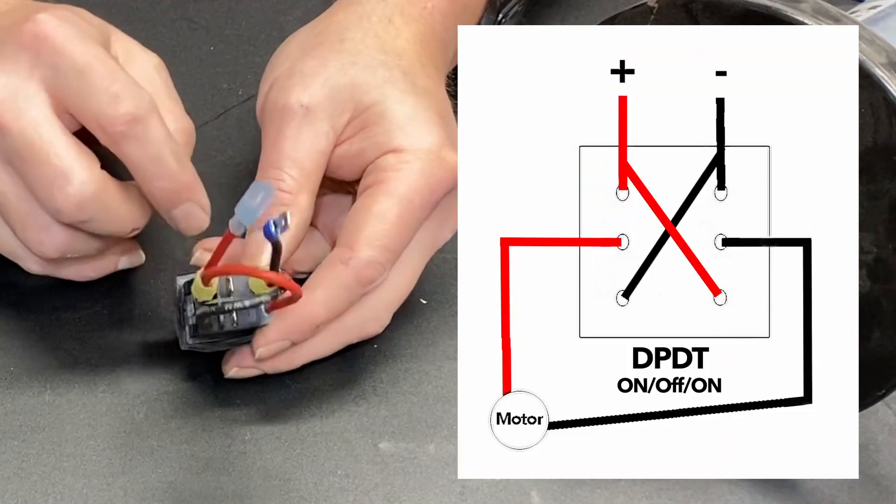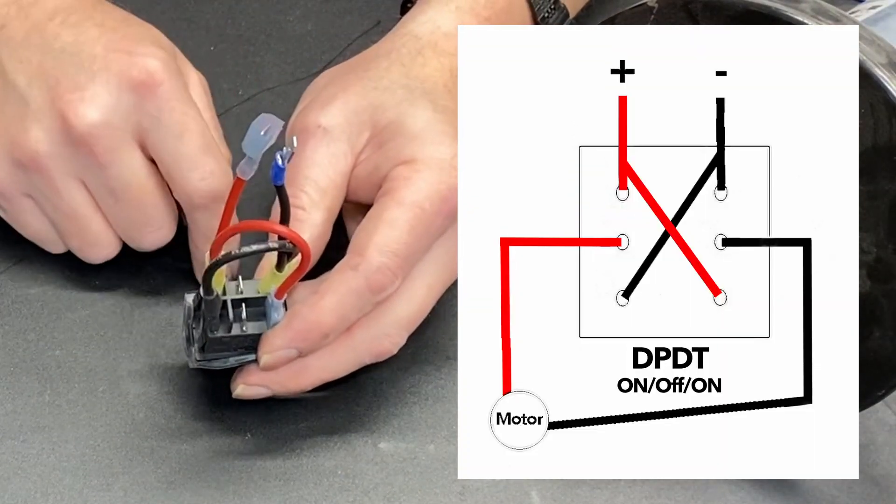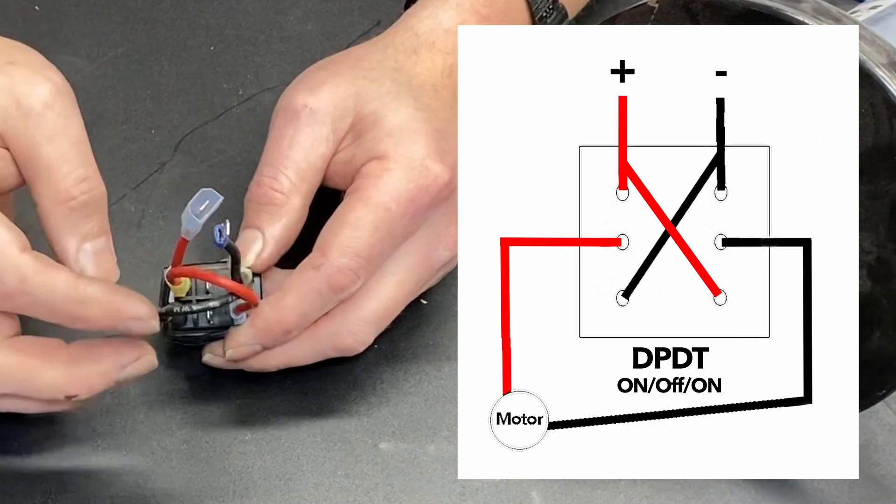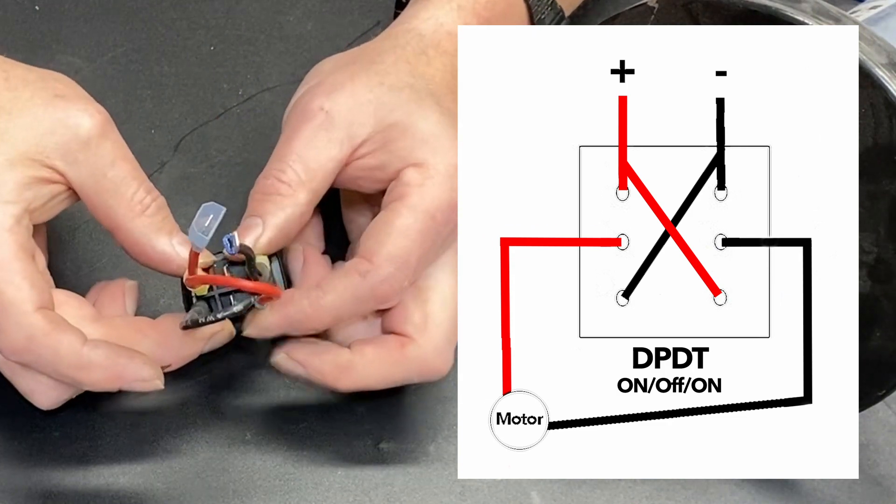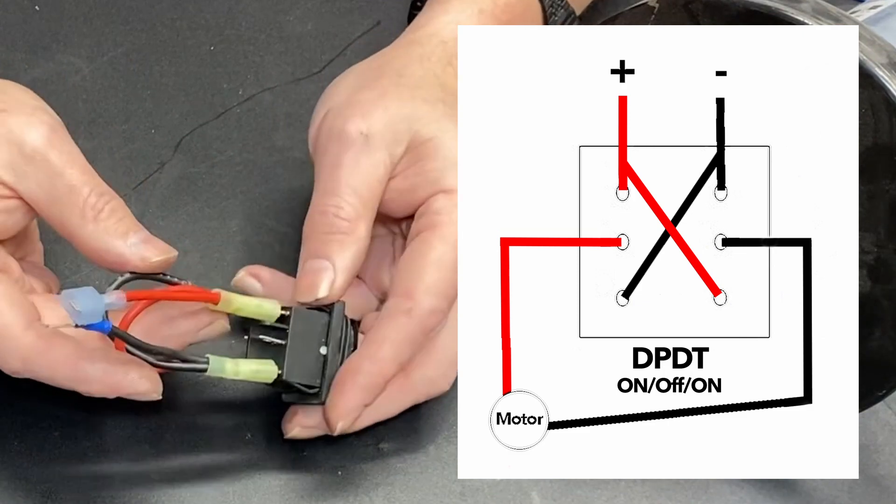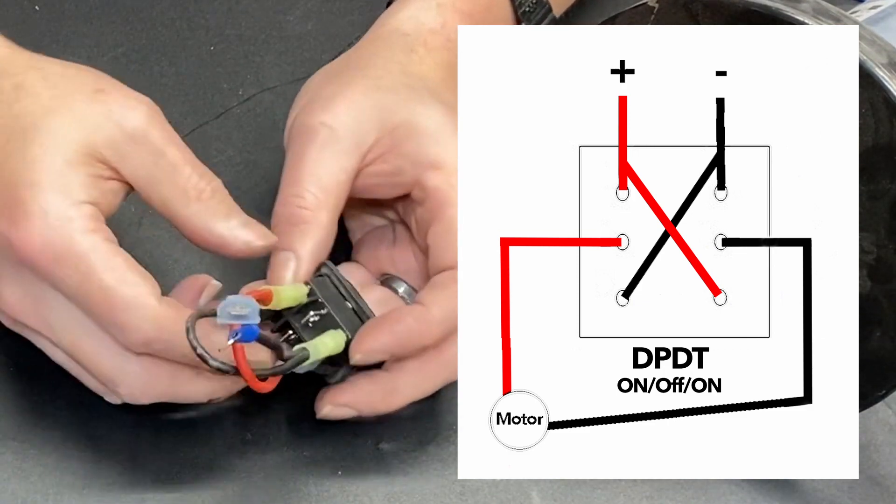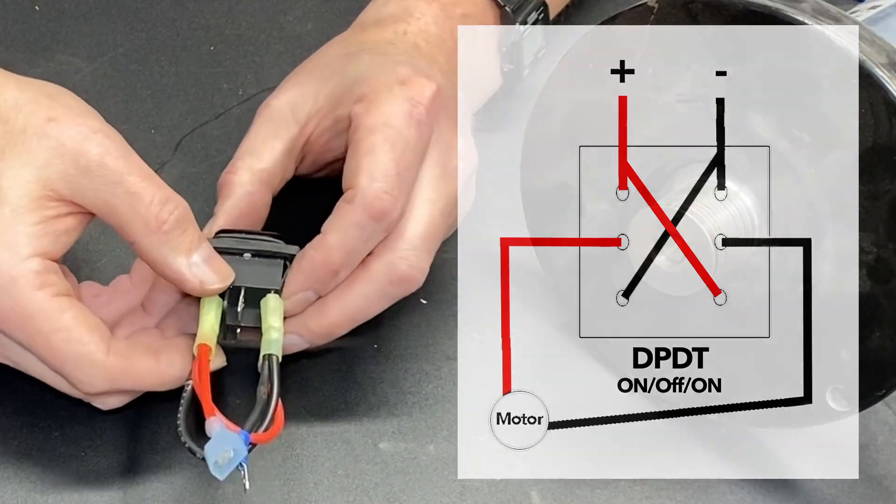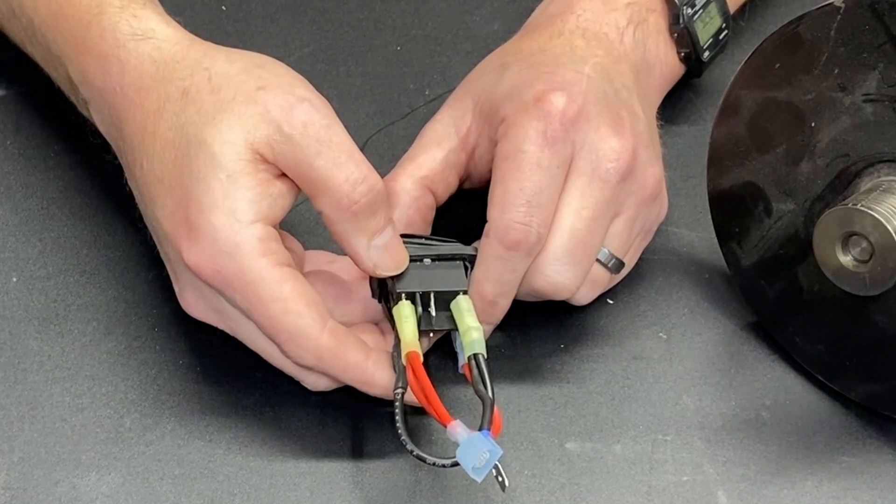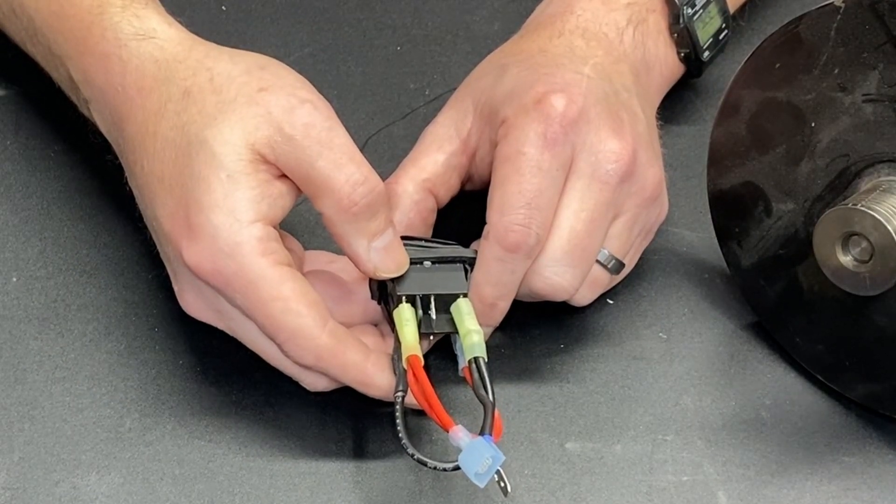Again, the two center terminals go to the motor. The two outside terminals are red and black, and it's very simple. We got the power coming in and then it works the exact same way. And that's all it takes to reverse the direction of your treadmill motor.